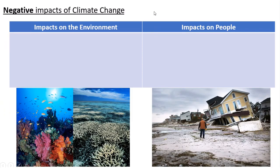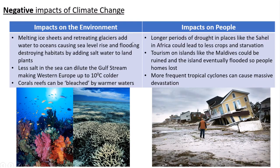The negative impacts of climate change are significant, with very few positive ones. Environmental impacts include melting of ice sheets, glaciers retreating, more water in the oceans causing sea level rise and flooding. That flooding can destroy habitats, and adding salt water to land-based plants can cause them to die out. There may also be less salt in the sea, potentially diluting the Gulf Stream, which could mean Western Europe and the UK are maybe up to 10 degrees colder. Warmer water can also bleach coral reefs, leaving lifeless reef rather than one full of abundant life.